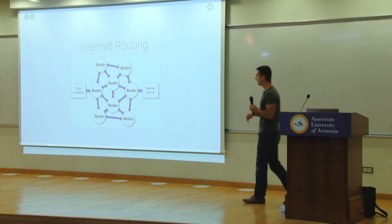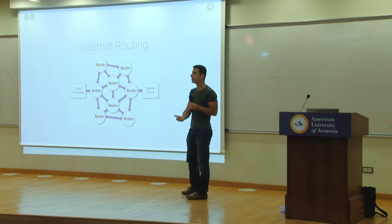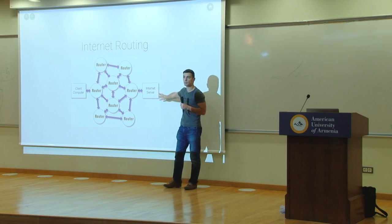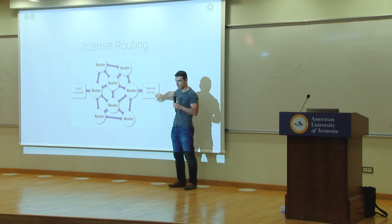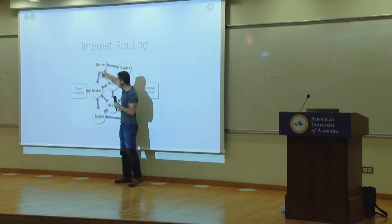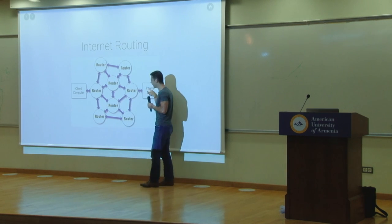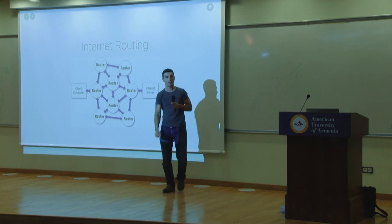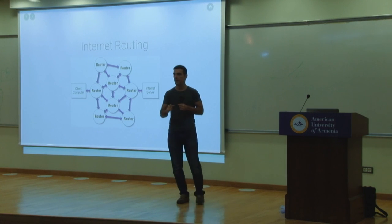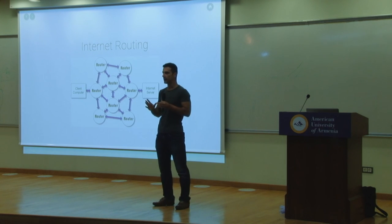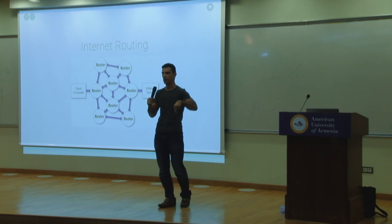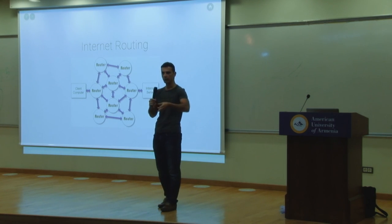This is an example of the routing system. You have your client computer, and another computer on the internet — let's just call it a server. When you send the packet, it can go through a series of routes and eventually find its way there. Note one thing: the size of the packet is fixed. These paper airplanes were made from standard paper — you can only write so much on a single piece of paper.